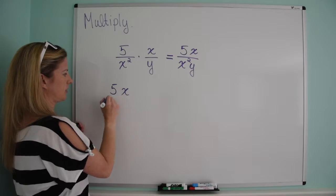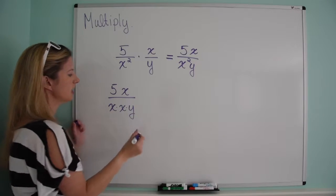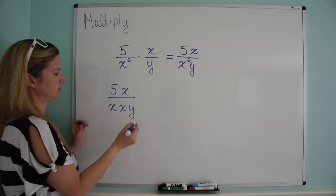I'm going to rewrite this just so you can see what's going on. 5x over, and then instead of writing x squared, I'm going to write x times x times y. This is just a great visual for you to see what's going on.